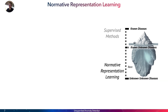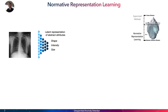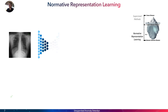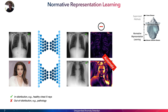Therefore the community developed the concept of normative representation learning, which assumes training only on unhealthy images and being able to learn the distribution of the data, with the goal to reconstruct with minimal error images coming from the same distribution, while having a really errorless reconstruction for out-of-distribution samples. This is traditionally done with autoencoders.